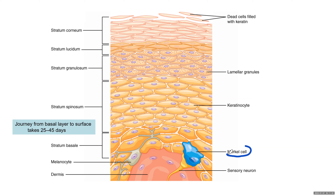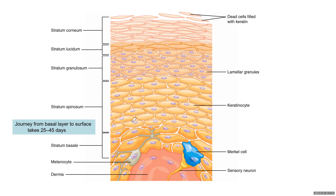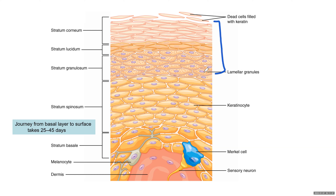Merkel cells are touch receptors and melanocytes are also found here. Melanocytes make melanin, which is then picked up by keratinocytes to protect their nuclei. As cells move towards the surface, they change their shape and morphology and they die. In stratum spinosum the cells are pretty much dying. In stratum granulosum, lucidum, and corneum, cells are dead and filled with keratin. Underneath the epidermis, you have the dermis.